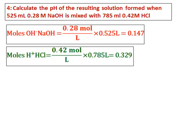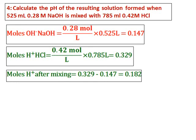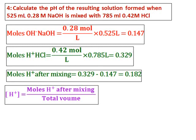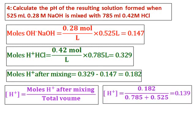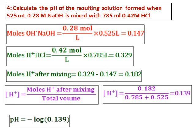Since HCl is in excess, the H⁺ and OH⁻ neutralize each other, and the remaining moles of H⁺ equal (moles H⁺) − (moles OH⁻). Divide the remaining moles by the total volume to get [H⁺], then calculate pH = −log[H⁺]. Because excess HCl remains, the solution is acidic with a pH less than 7.